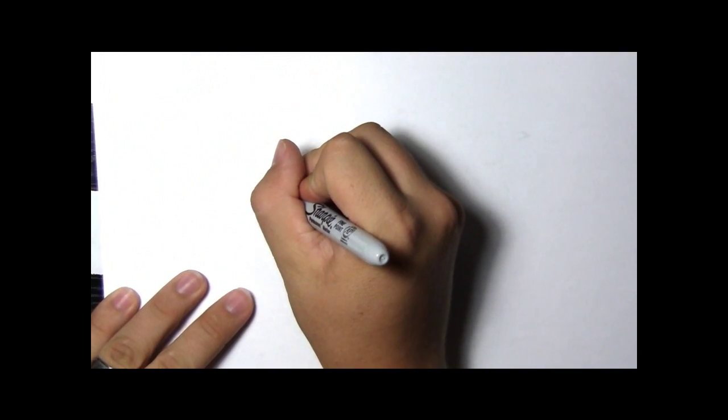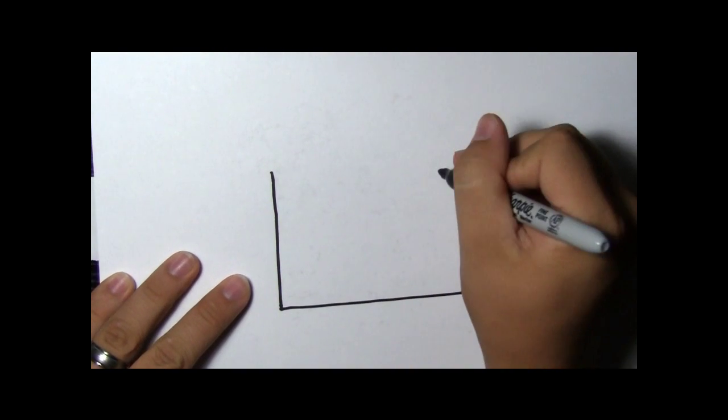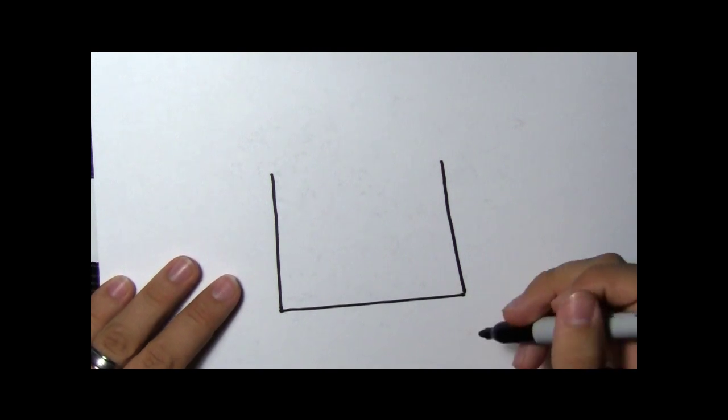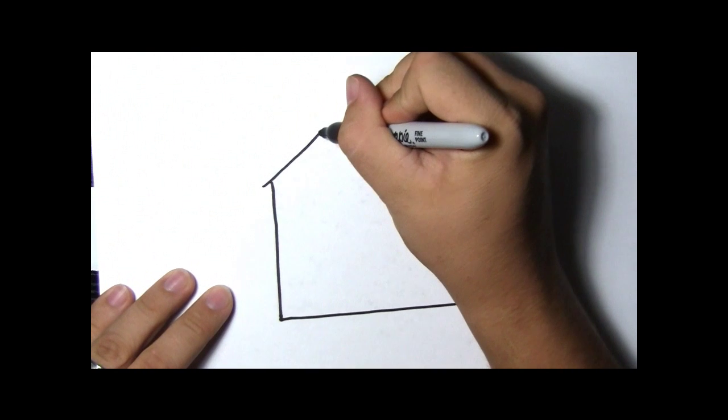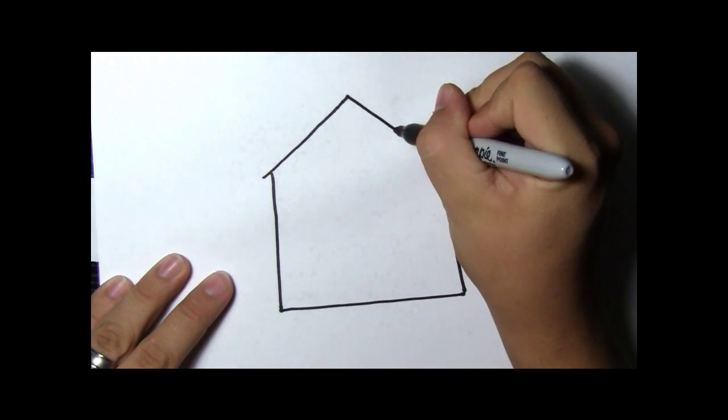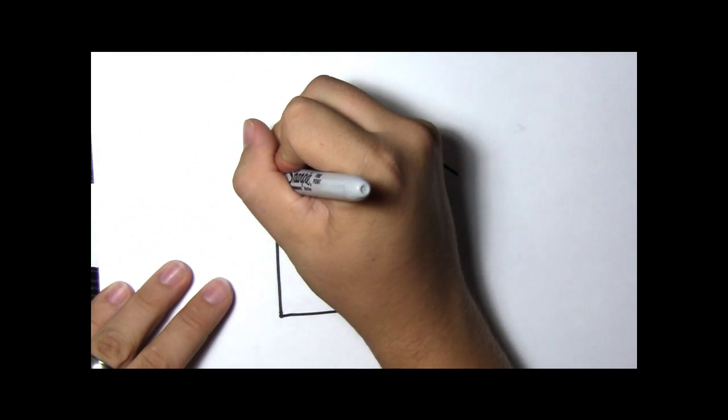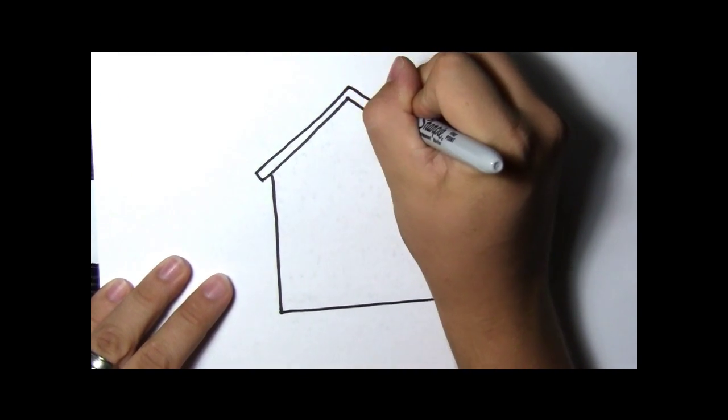A house is kind of like a square with a roof on it. So let's draw a square but only draw three sides. We need to put on a roof. For our roof it's kind of like a triangle. Let's make it double thick to keep the rain out from on top of our heads.